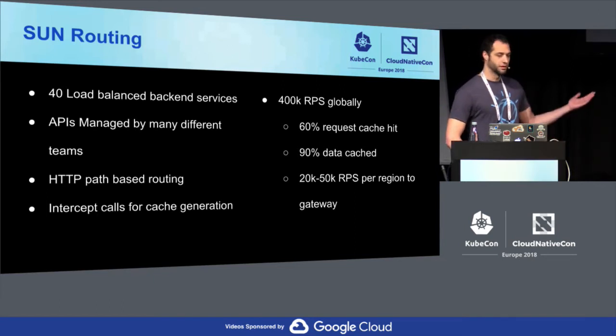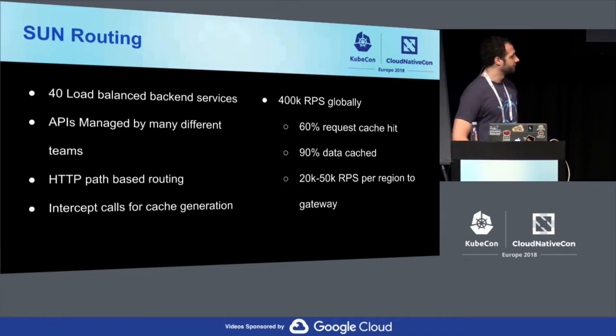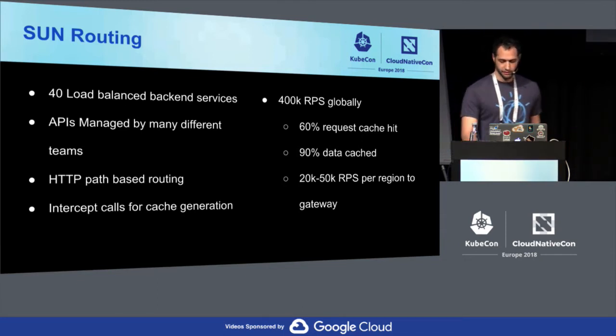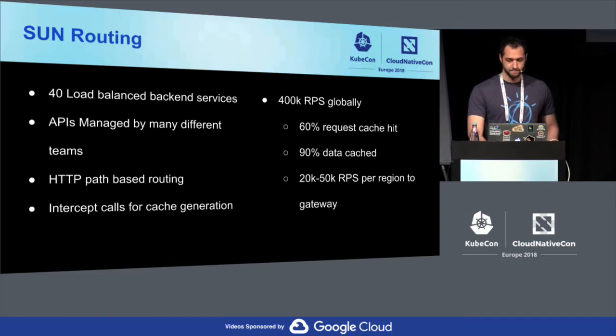When we looked at Istio, we knocked the requirement down to about 50,000 requests per second per region or gateway.